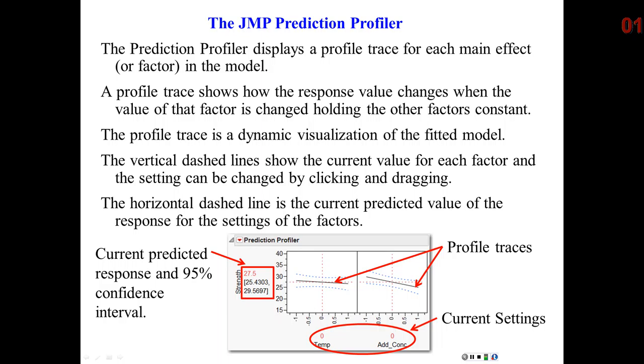The y-axis gives you the predicted response, plus you're given a 25 or 95% confidence interval for the response, and then for each factor, you're given a profile.